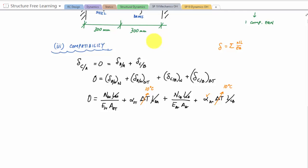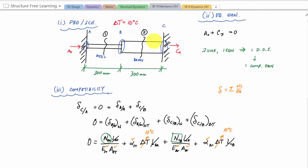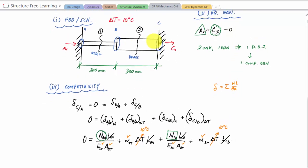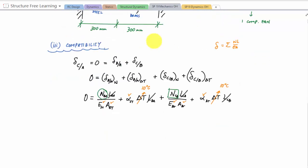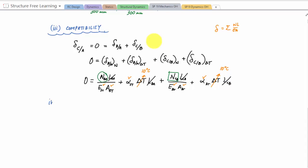And then I would have NCB·LCB over E_brass·A_brass plus alpha_brass·delta T·L_brass like that. And so now I have, let's go through what we know and what we don't know here. What's convenient is all my lengths are all 300. So actually they all kind of, I can divide through both sides. I could divide both sides of the equation by L and these would all just kind of cancel. All the L's would disappear. Delta T is 10 degrees Celsius. I know alpha brass. I know alpha steel. I know E steel. I know the area of steel. I know E brass. I know the area of brass. The only things I don't know are NBA and NCB. And in the prior equation, I don't know AX and I don't know CX. So in a way I have four unknowns. So the question is, how can I relate the internal loading in segment BA to the external loading in the support reaction? Can I?